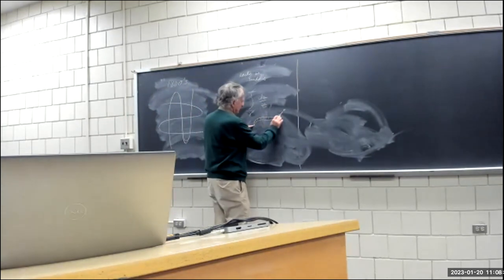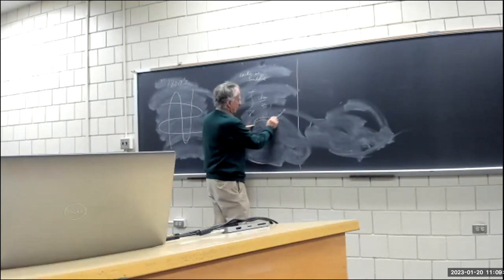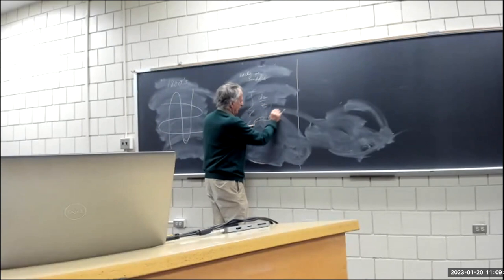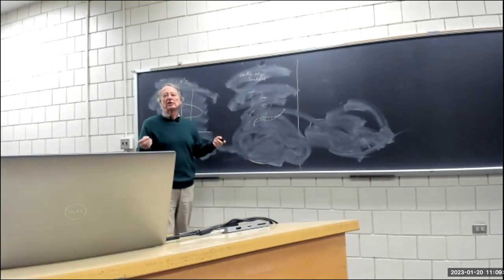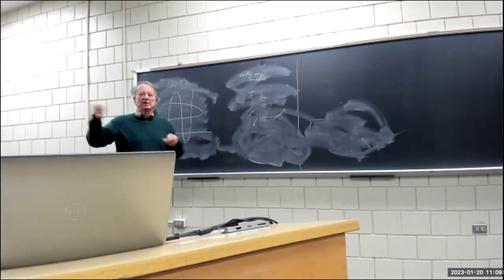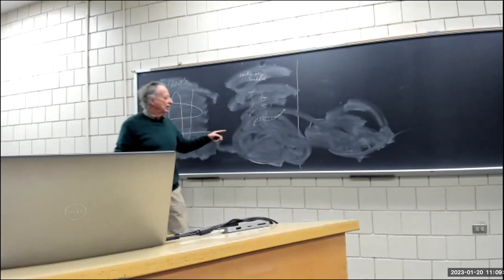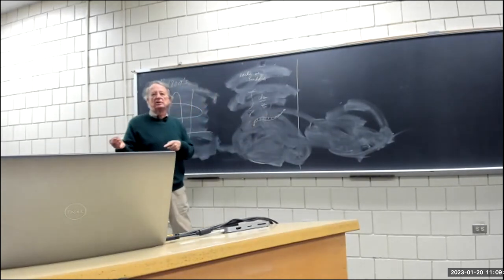The reason you get the same values when you go around and come back is that this closed curve bounds a region, and you have some kind of Stokes theorem. When you write Stokes theorem out, you've got zero on one side, so you get this integral minus this integral equals zero.